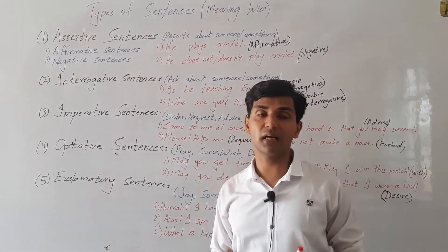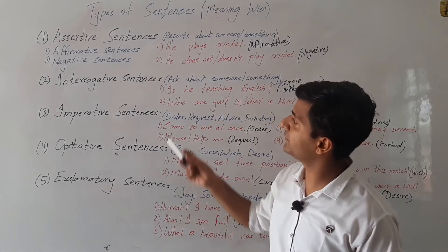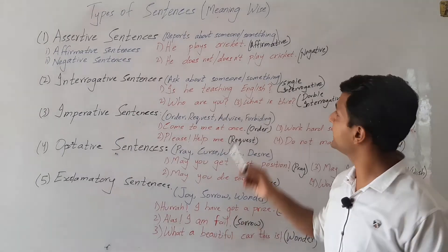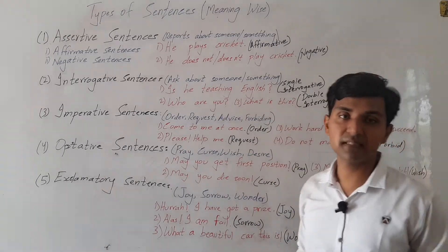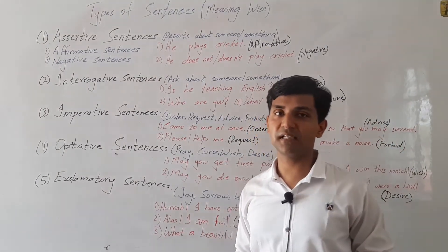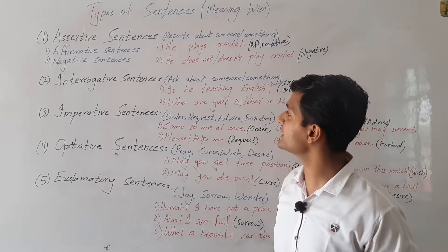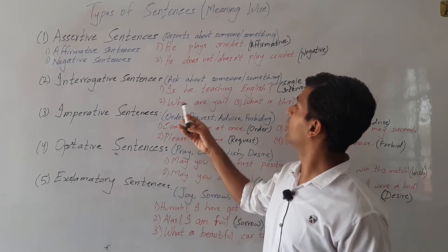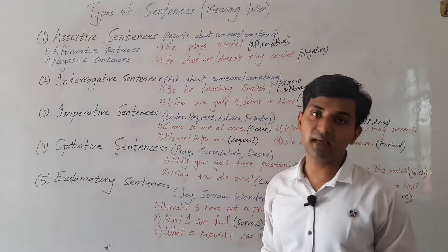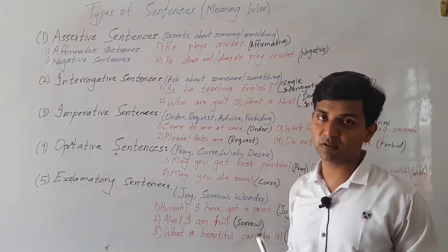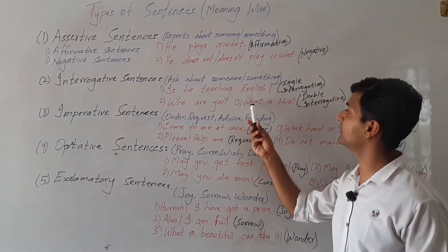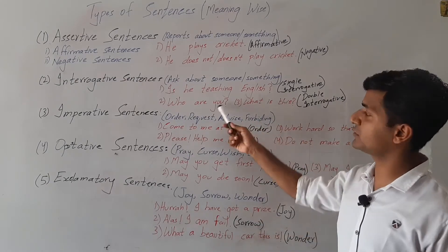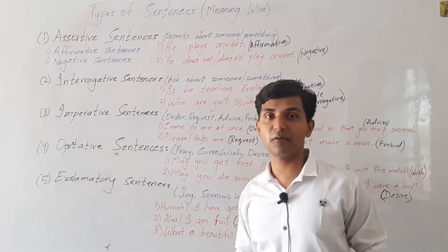So here we have examples. 'Is he teaching English?' — it's a single interrogative sentence. 'Who are you?' — that is another interrogative sentence. Then we have 'What is this?' — so these sentences are double interrogative sentences.